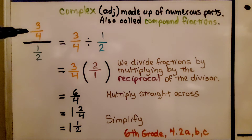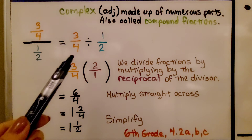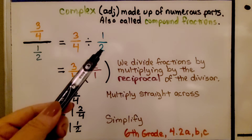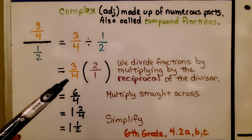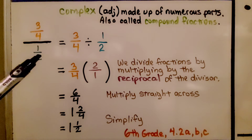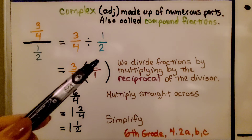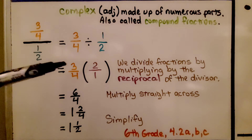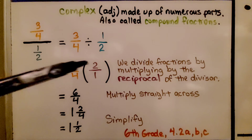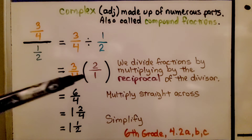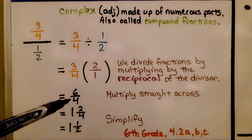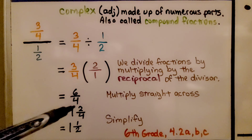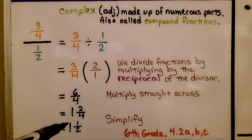Here we have 3/4 divided by 1/2. We can write it as 3/4 divided by 1/2. We divide fractions by multiplying by the reciprocal of the divisor, so the reciprocal of 1/2 is 2 over 1. We multiply straight across: 3 times 2 is 6 and 4 times 1 is 4. We simplify it — we have 1 and 2/4, which simplifies to 1 and 1/2.